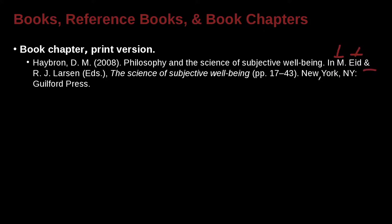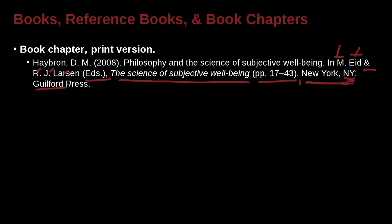Then we have an ampersand because there are two editors: R.J. Larson — maybe his name is Ron J. Larson. So first name, middle name, last name, and these are editors, so we say 'Eds.' with a period. Then we have the name of the overall book, then the pages of the chapter, then the location — the city and, if it's in the United States, the state. For example, 'New York, New York' — this is the American way to write the state — with a colon, no space before, one space after, and then the publisher: Guilford Press.